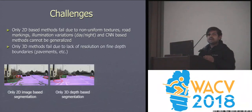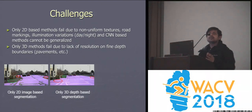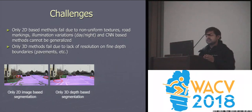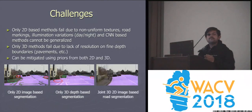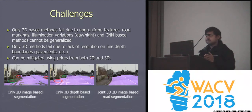If we use only 3D-based methods, such as those using LiDAR or SLAM-based techniques, they fail when there is a lack of resolution at finer boundaries such as at pavements. But if we combine both 2D and 3D methods, they can mitigate these problems and complement each other to achieve better segmentation and free space detection.